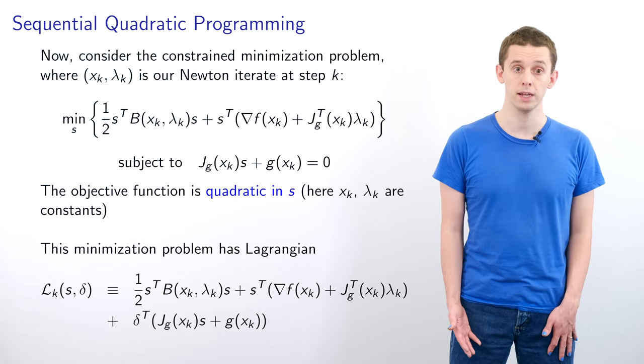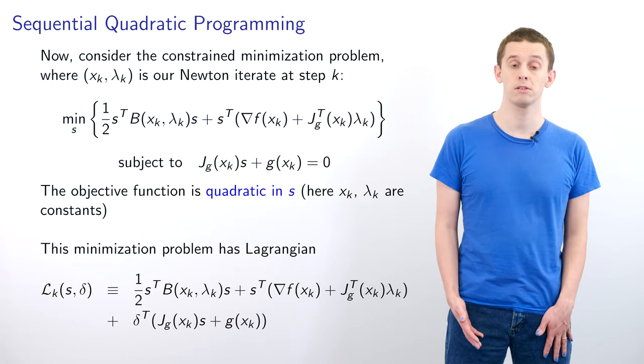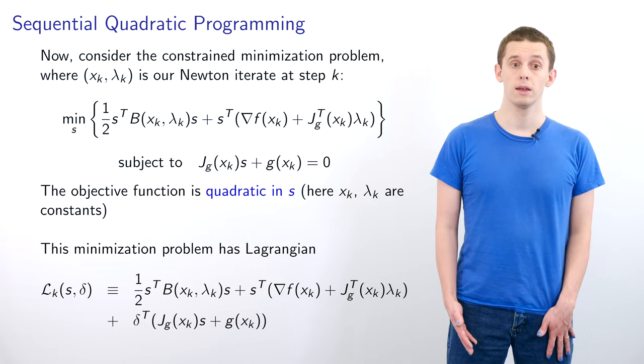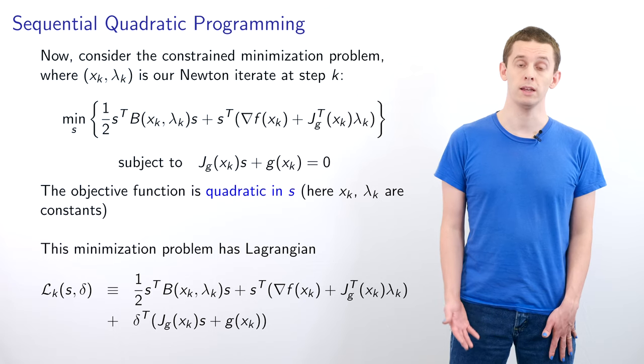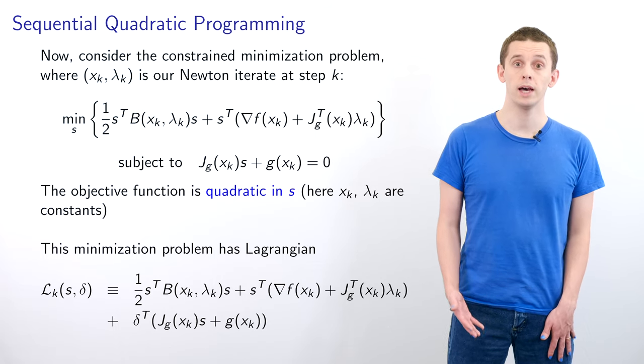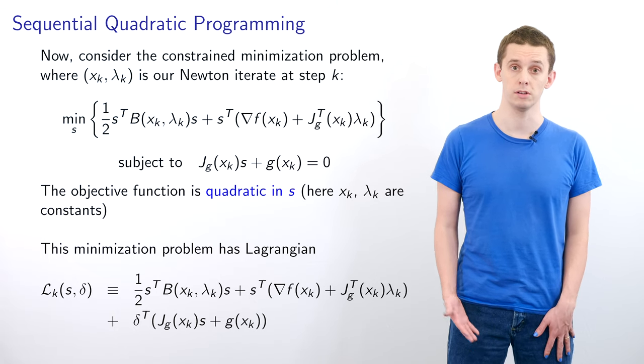Additionally we have constraints that J_g(x_k)s + g(x_k) = 0. This objective function is quadratic in s and the constraints are linear in s, because we are treating x_k and λ_k as constants here.